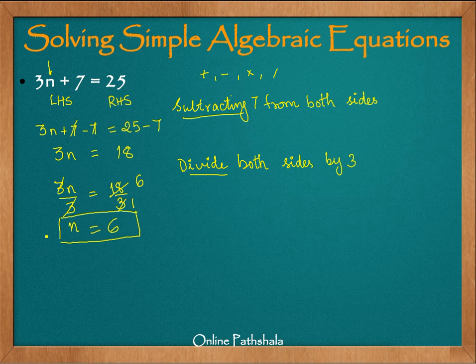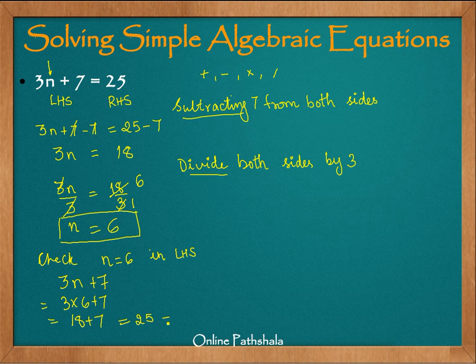Now, a good practice is to check the solution. So we check by substituting n equals 6 in the left hand side. Let us put 3n plus 7 equals to 3 into 6 plus 7 or it is 18 plus 7 which is equal to 25. This 25 is what we have in RHS. So we say that for n equals 6, the left hand side equals right hand side and therefore n equals 6 is a solution of this equation.